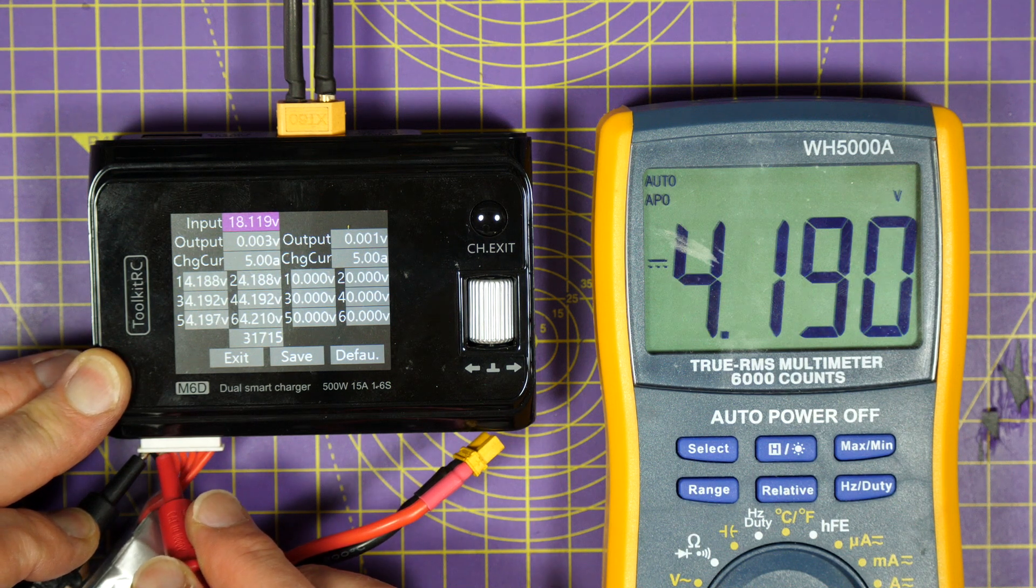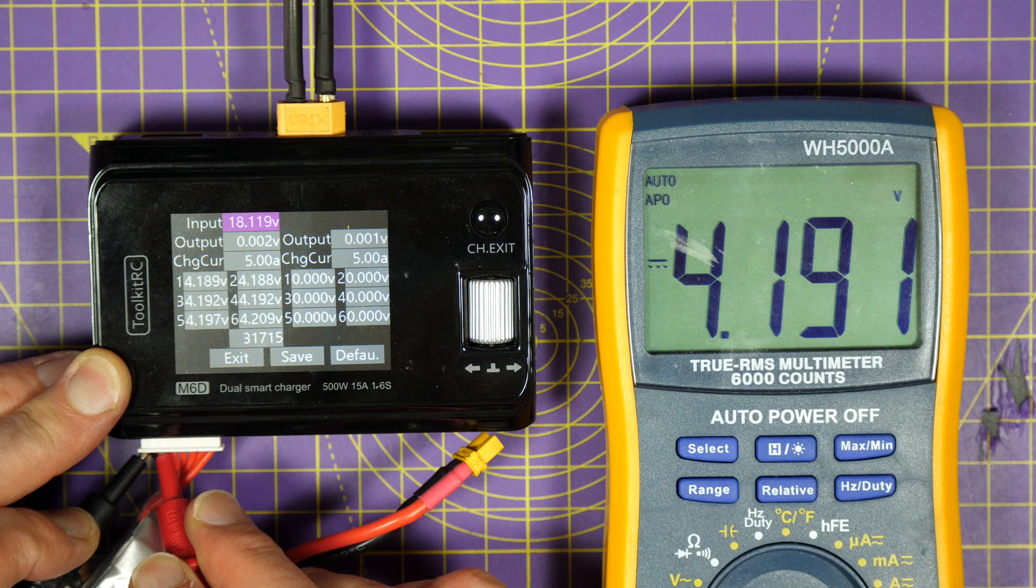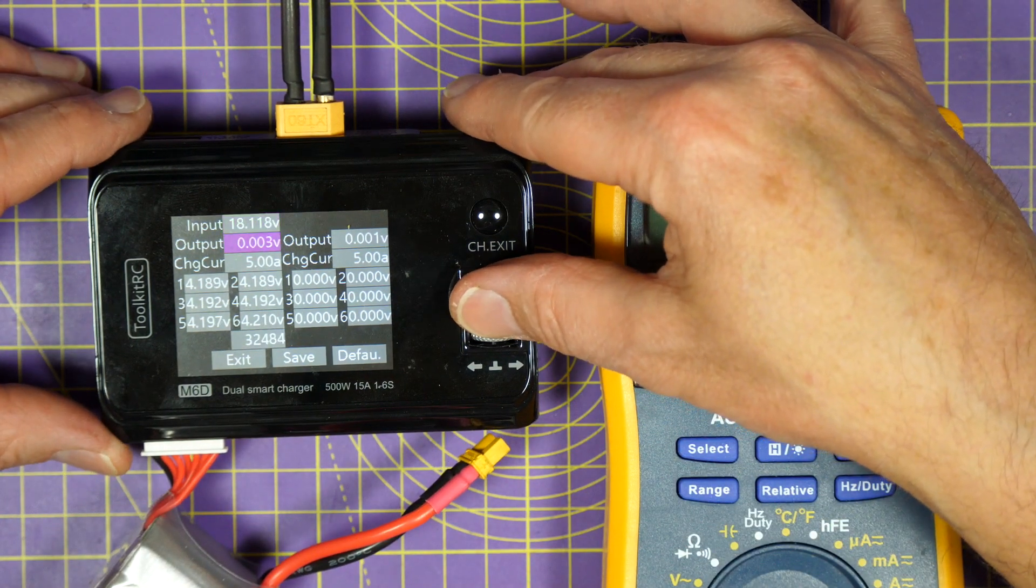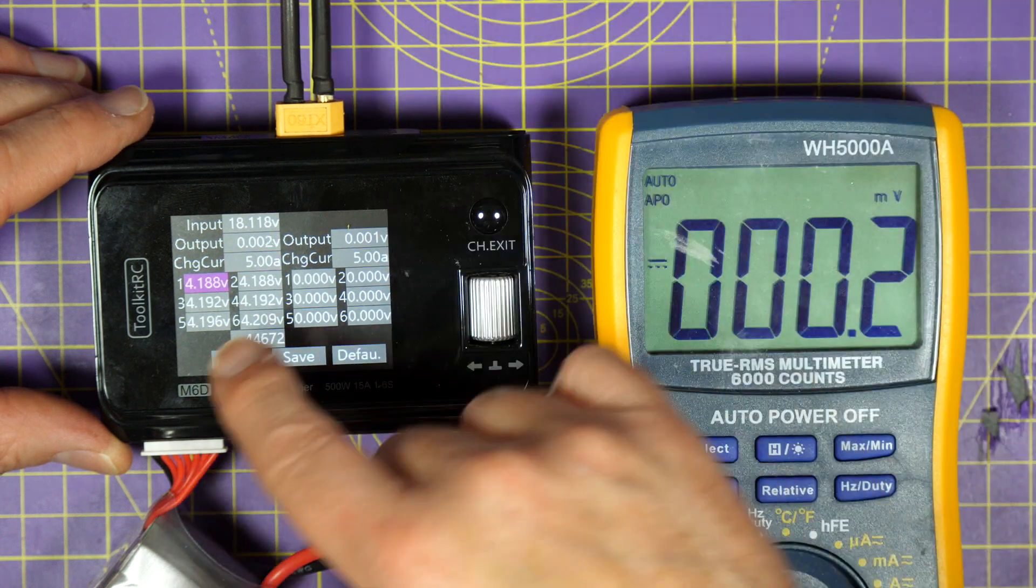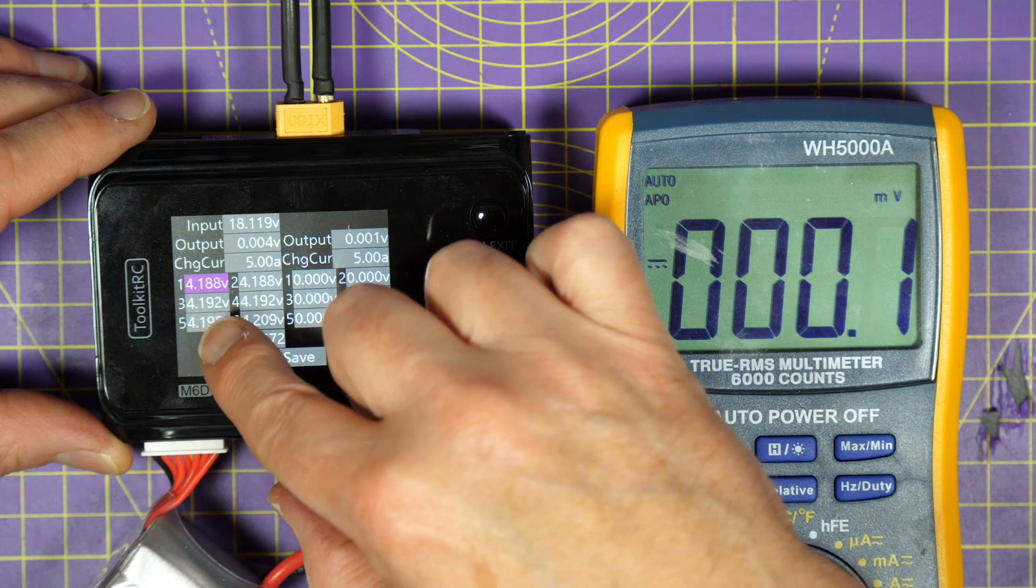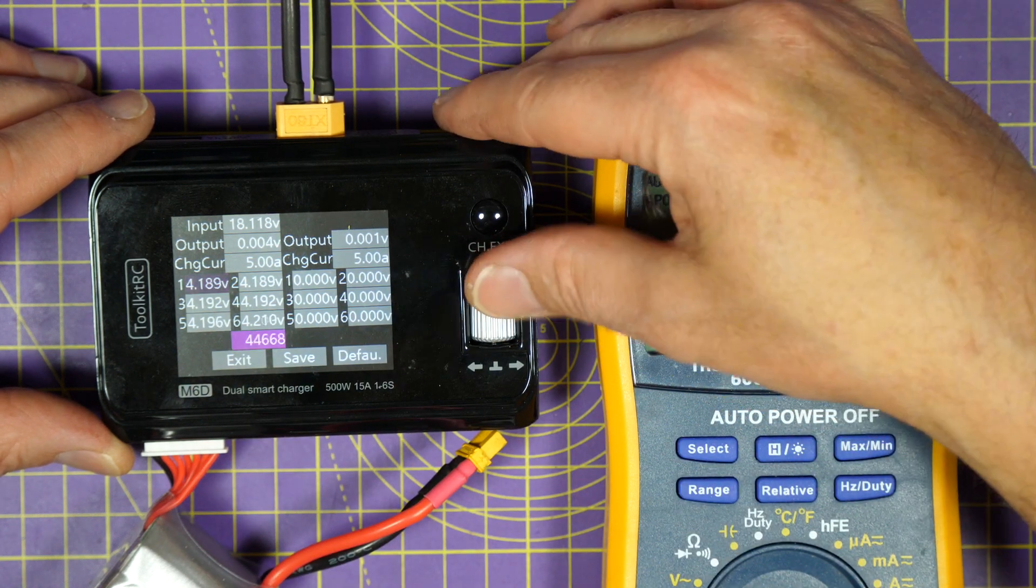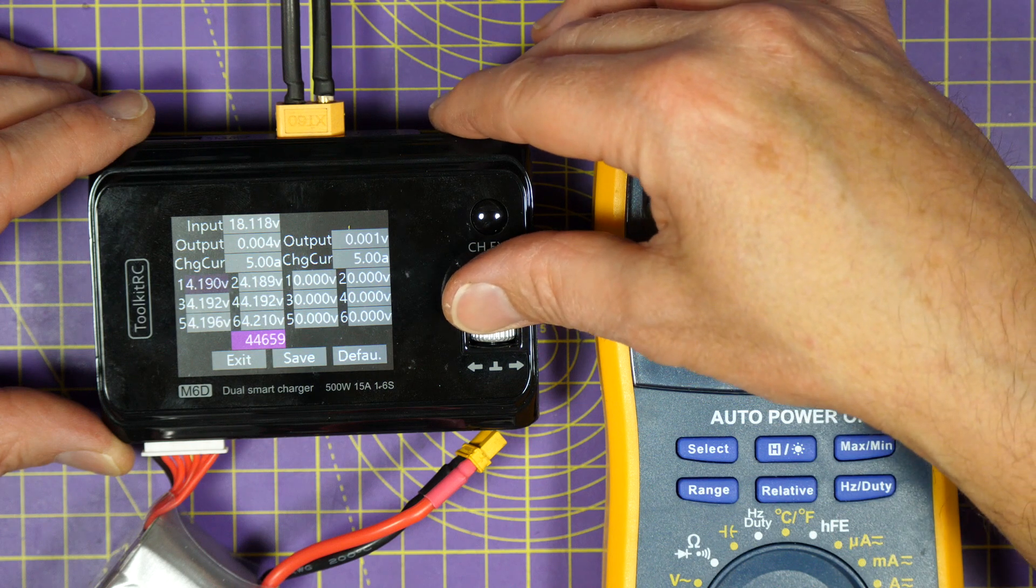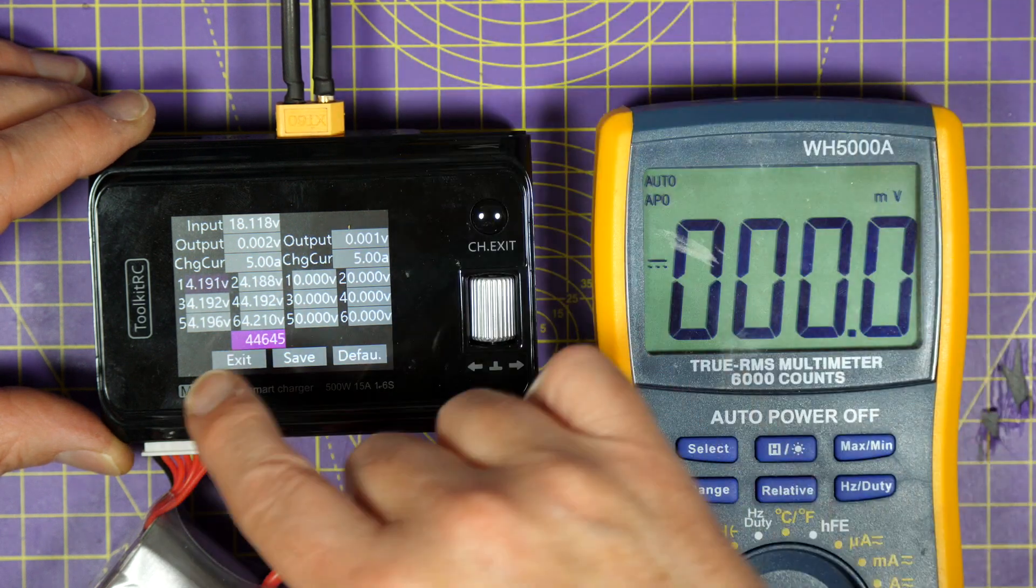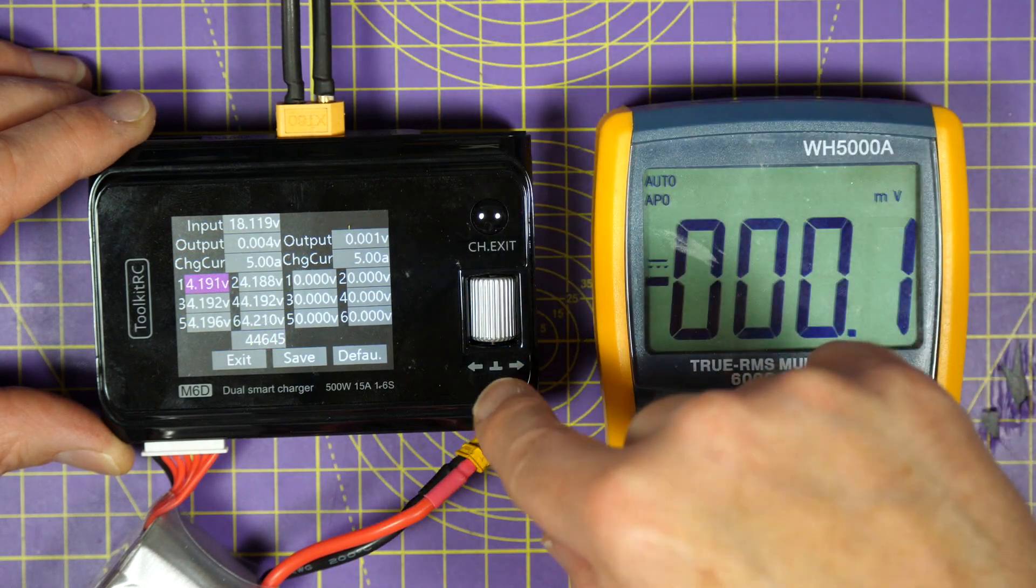So our first battery cell is 4.191. If we scroll down here to the first cell, we need to get that to 4.191. So press the scroll bar and just crank it around to 4.191 and press return or press the scroll.